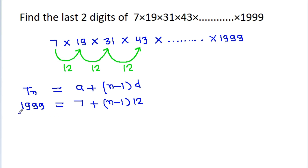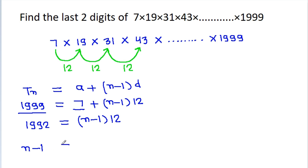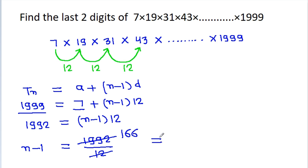So 1999 minus 7 equals 1992, which equals (N-1) times 12. Therefore N-1 equals 1992 divided by 12, giving N-1 = 166, so N = 167. The total number of terms is 167.